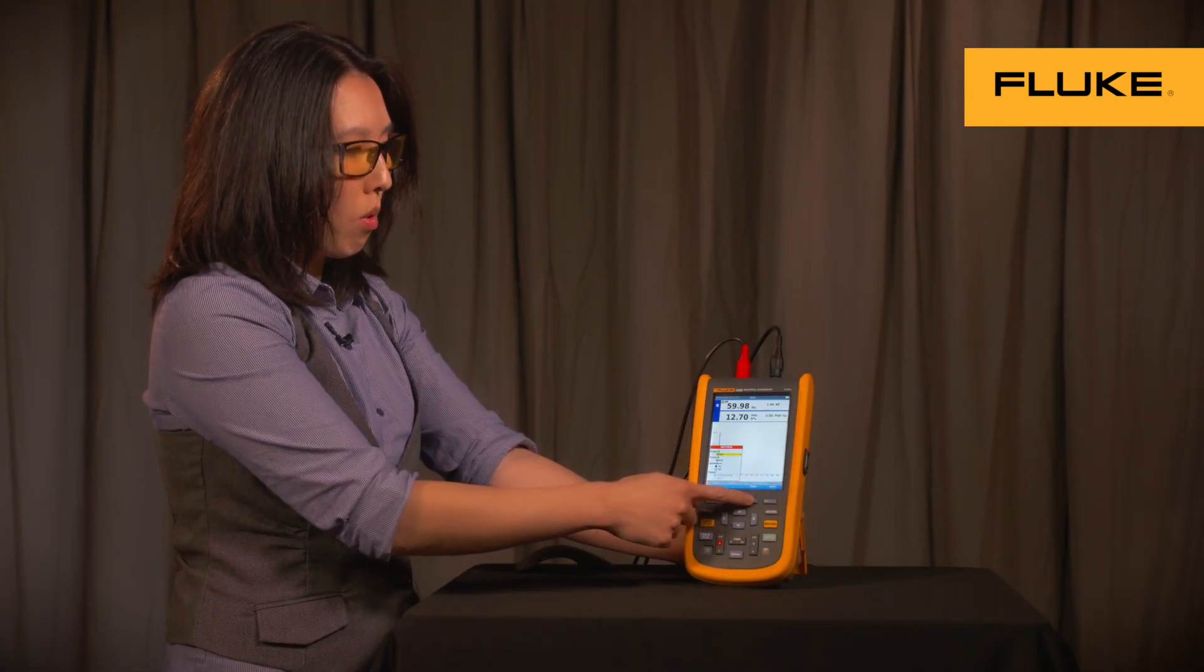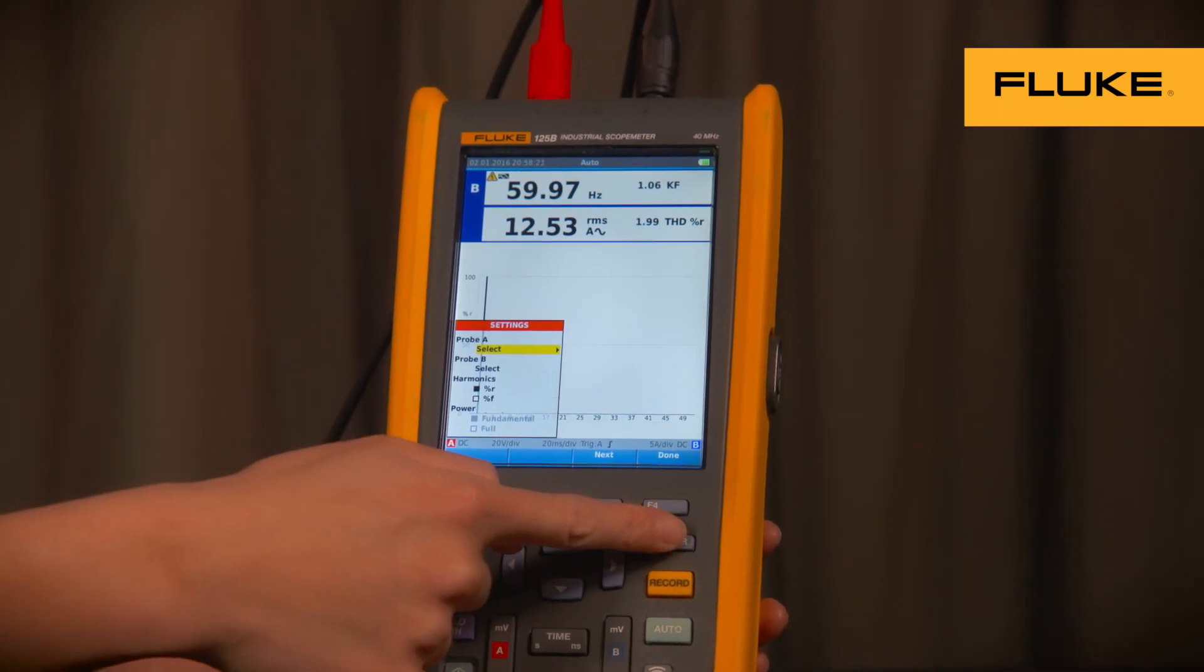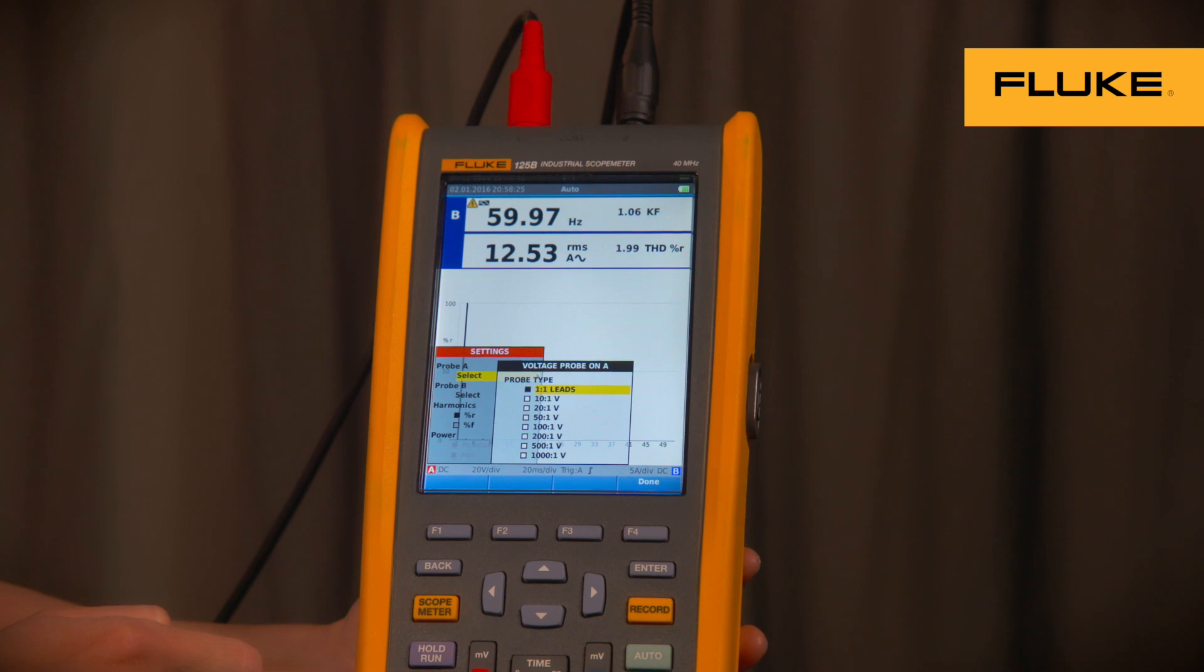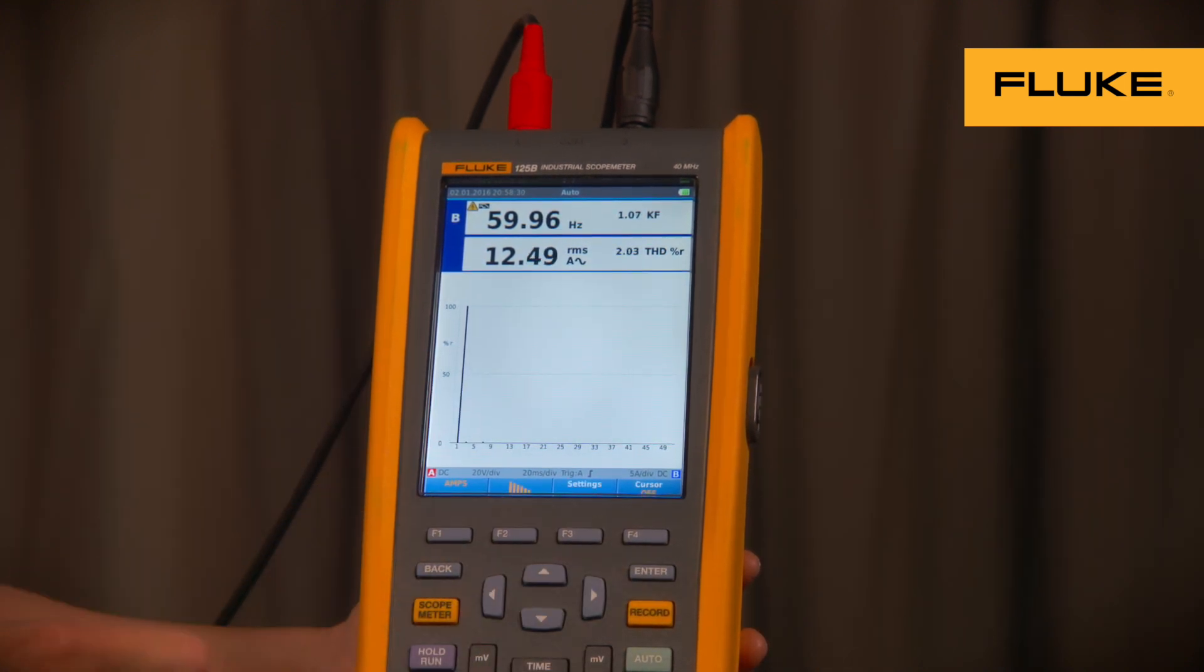You also need to make sure your settings are right. Press F3 for your voltage probe, probe A or channel A. Press the Enter key. In this case, we have the 1 to 1 test lead, which is the STL 120. Press Enter.